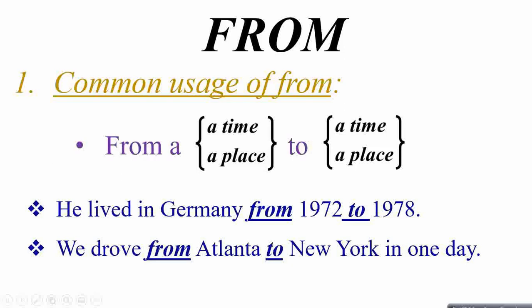Now what else common uses do we have with this preposition from? From a time or a place to a time or to a place, we use this preposition from. For example, he lived in Germany from 1972, it's a time, to 1978.